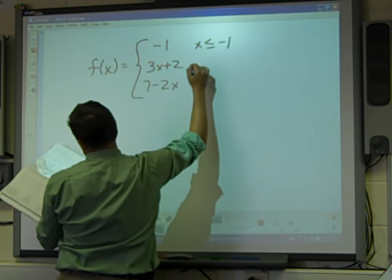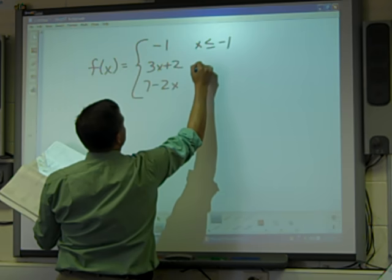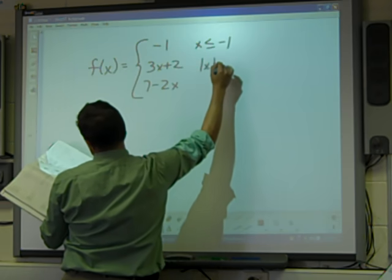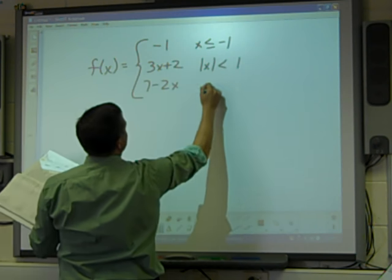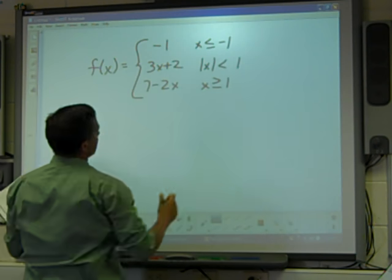X is less than or equal to negative 1. Absolute value of x is less than 1. X is greater than or equal to 1. All right.